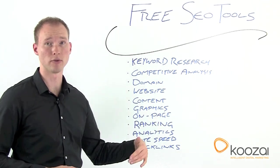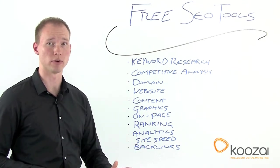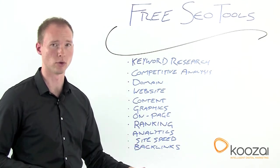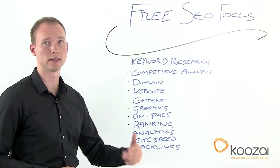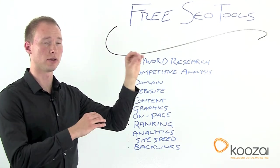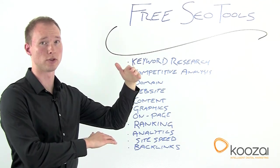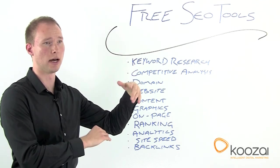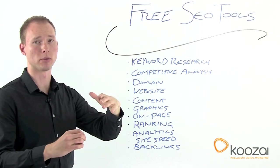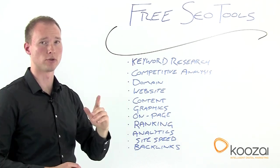A tool you can download for free is called Traffic Travis. There's a free and a paid version, so just stick with the free version — it's all you need. It will give you a competitive analysis: type in a key term and it will show you the search engine results page in Google for your location, then show you the number of backlinks and the on-page optimization for each site as well.